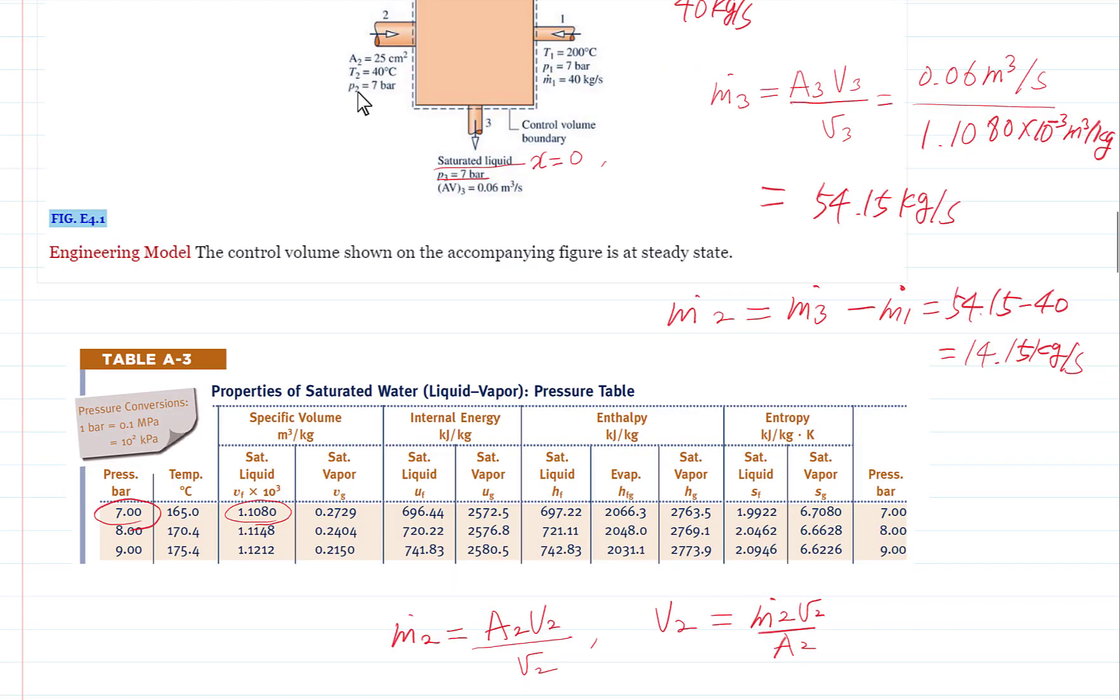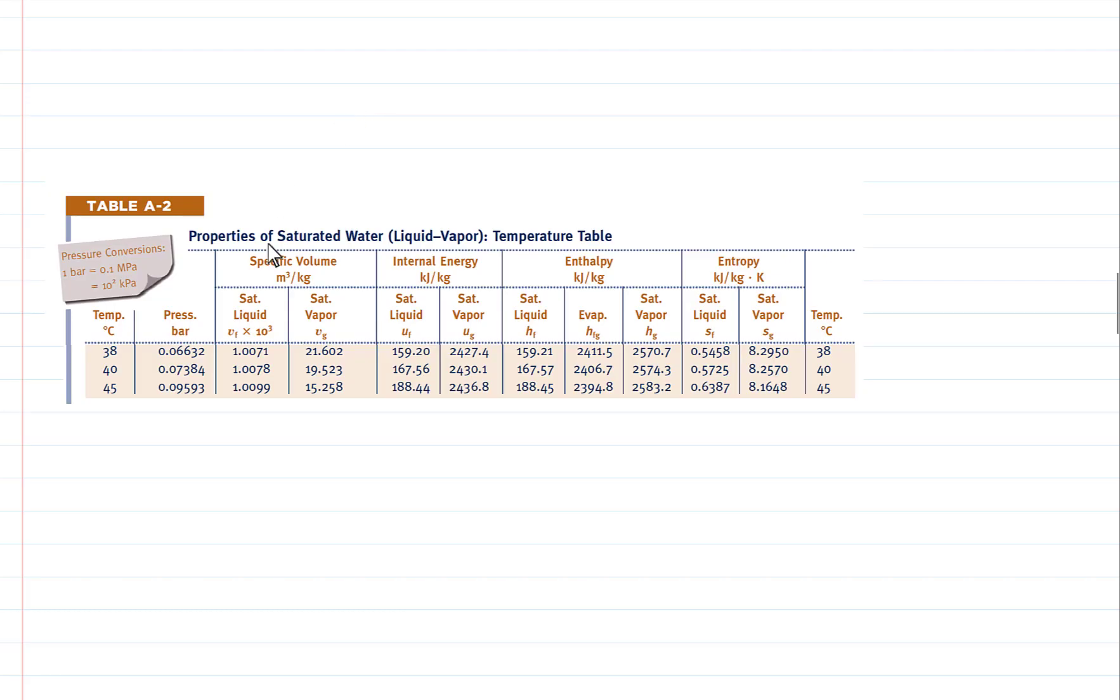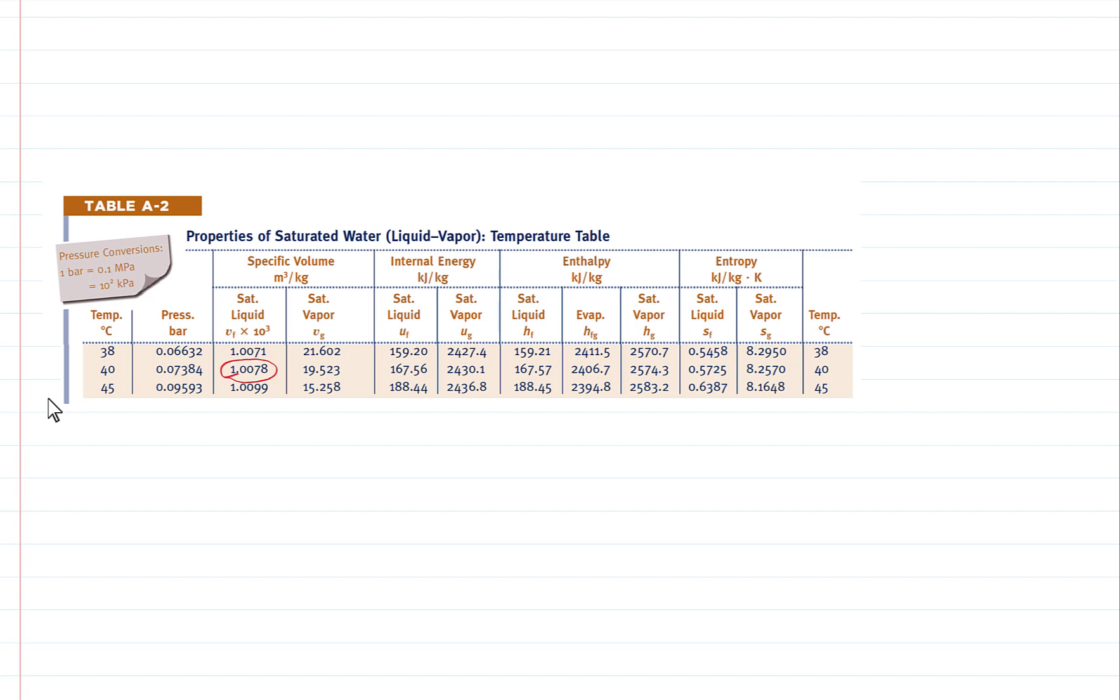At inlet 2, temperature and pressure are known. So, we can fix the state. Let's check the pressure on the temperature. At inlet 2, from the saturated water table, at 40 degrees Celsius, the saturation pressure is 0.07 bar. But at inlet 2, the pressure is 7 bar, which is much greater than the saturation pressure. That indicates the phase of water is compressed liquid. We have a compressed liquid table for water, but we may not be able to find the correct tables at the given condition. So, what we are going to do is to approximate the phase as saturated liquid. So, at 40 degrees Celsius, specific volume is 1.0078 times 10 to the negative third.